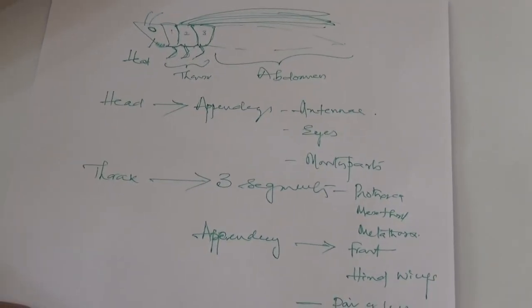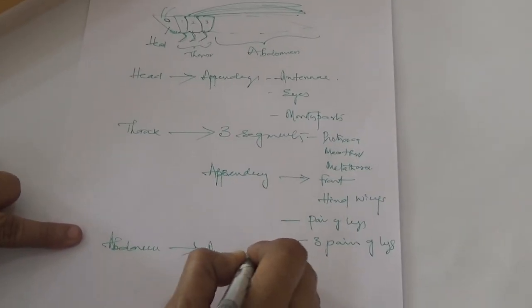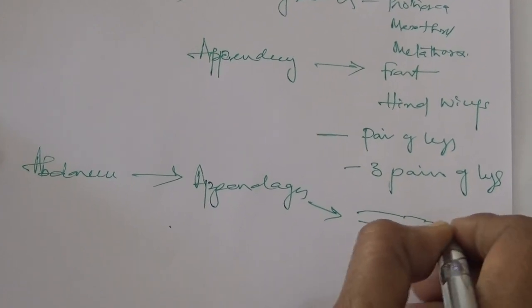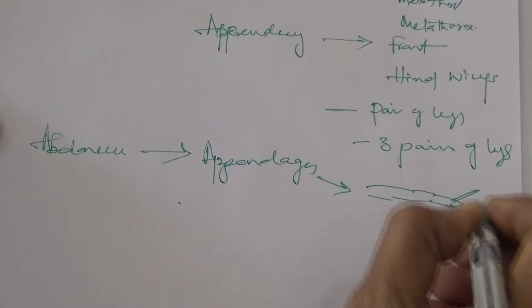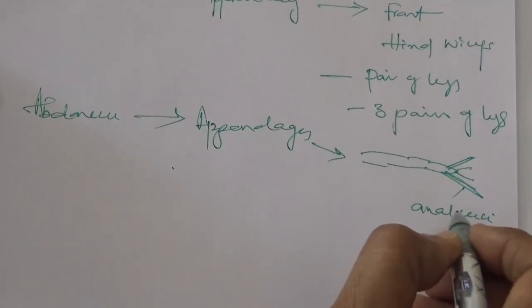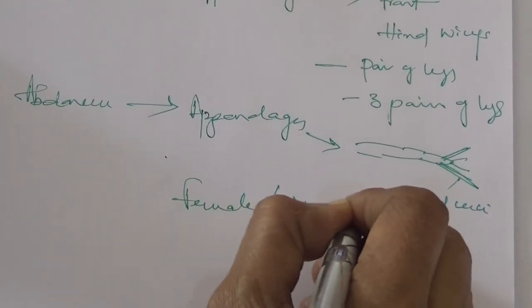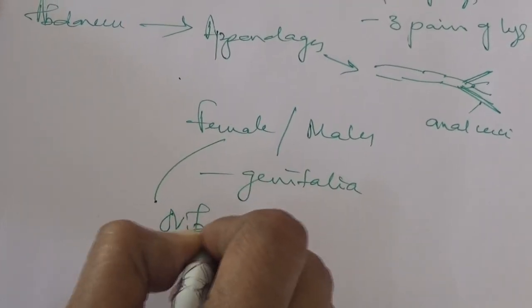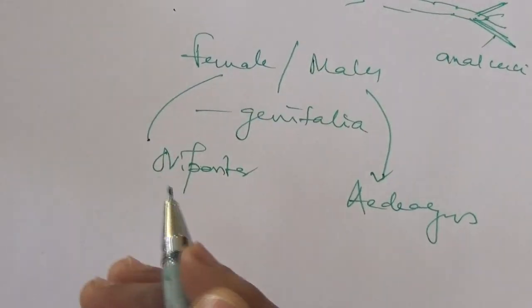Coming to the abdomen: generally you cannot see any appendages, but in some insects you can find structures like anal cerci on the last abdominal segment, as in cockroach, or structures like styli. In addition, if you see male and female insects, how you differentiate the sexes is by the external genitalia — in the case of female it is the ovipositor for laying eggs, and in the case of males it is the aedeagus or penis.